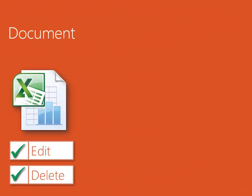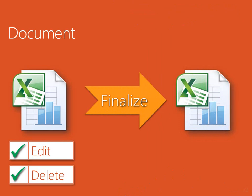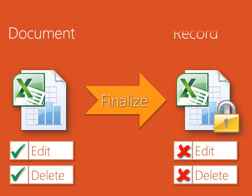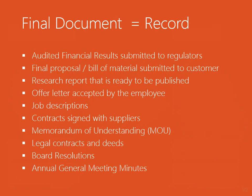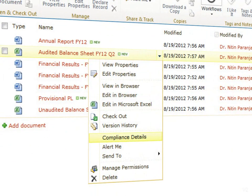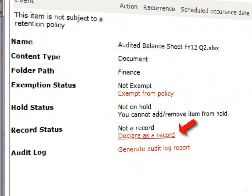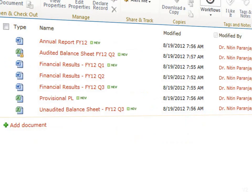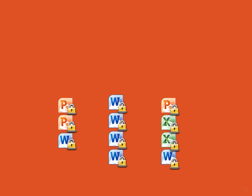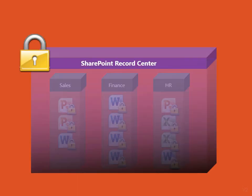A record is a document that has been finalized. When you convert a document to a record, it enforces certain controls — in this example, we want to prevent editing and deletion of the document. All these are examples of final documents and therefore should be stored as records. When the document is finalized, it can be easily converted into a record. The document is still stored in the same library, but it is now a formal record. If you have a large number of records, it is much better to move these into a separate site called a record center.